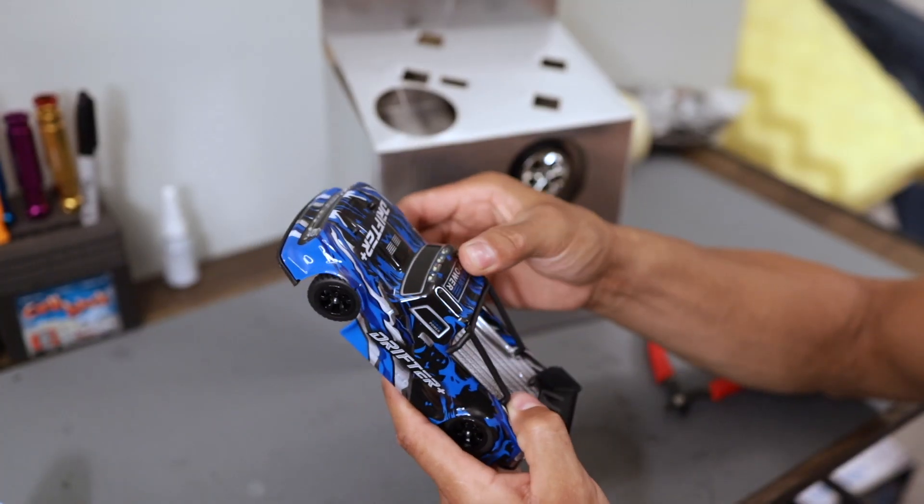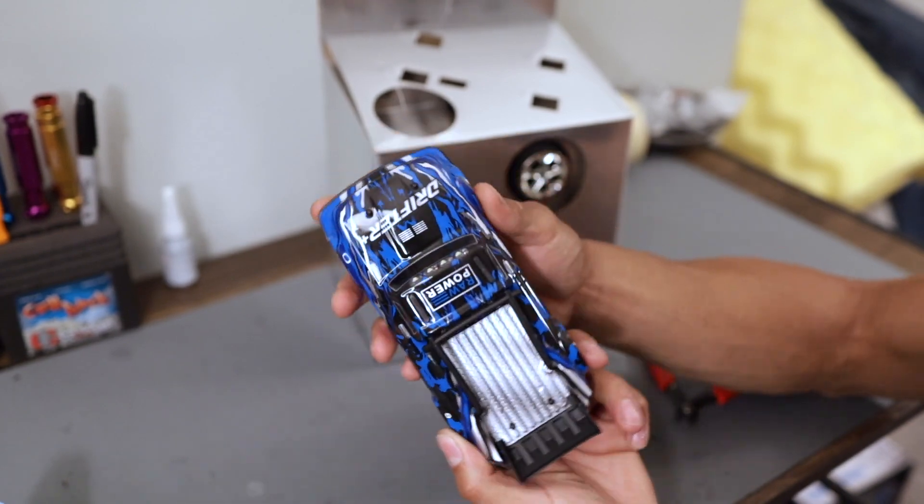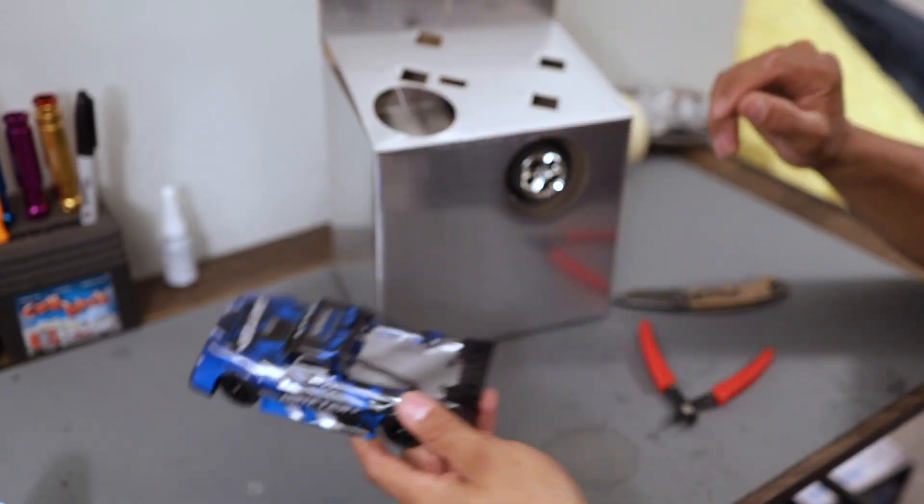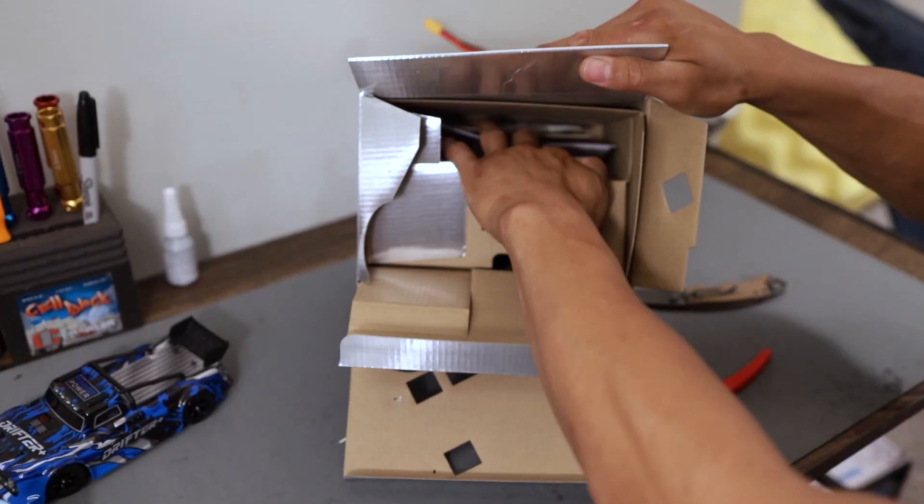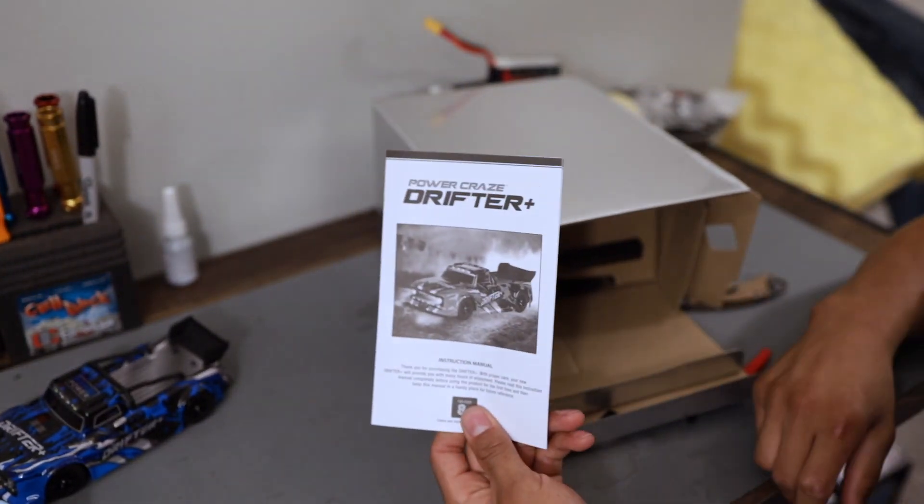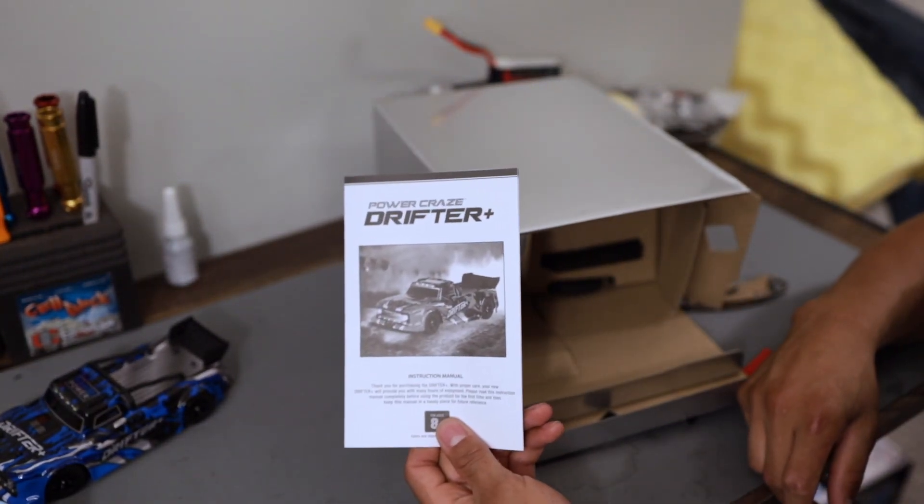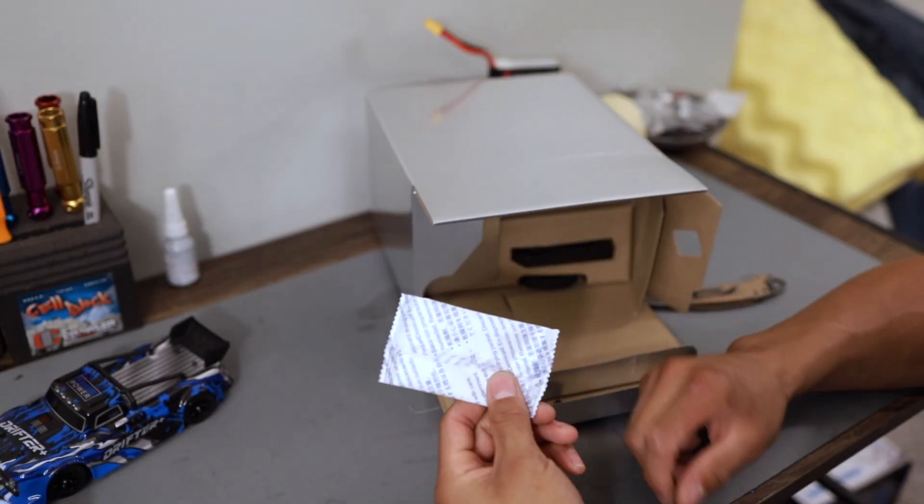You have to read the directions on how to take the body off. Alright, we're going to figure out how to take that body off. Let's set this guy to the side. Let's see what comes in the box. Alright, so first thing we got is going to be a user or instruction manual. We're definitely going to need to get that and see how to take that body off.